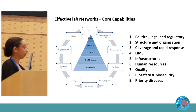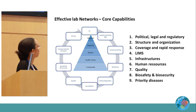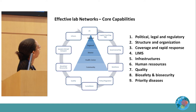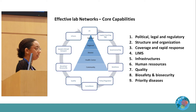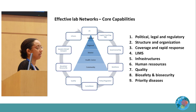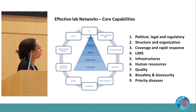As presented by Dr. Maseri Keita yesterday, the tier laboratory network can only be functional if all core capabilities are in place. Nine core capabilities have been defined: political, legal, and regulatory elements; structure and organization of the tier laboratory network system; coverage and rapid response; laboratory information management system; infrastructure; human resources; quality; biosafety and biosecurity; and priority diseases. In the first stage we assess individual components, then examine how they interact and how functional they are together.